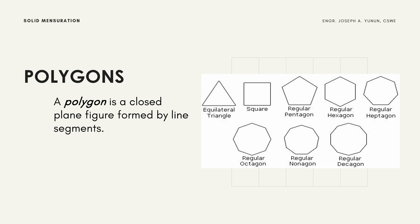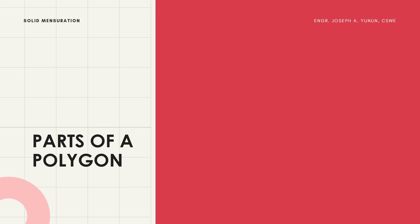In the given figures, some examples of polygons are shown — most or all of them are regular polygons. You have the equilateral triangle with equal sides, a square with equal sides and equal angles, a regular pentagon, regular hexagon, heptagon, octagon, nonagon, and decagon.